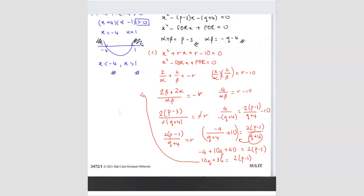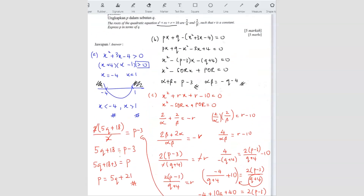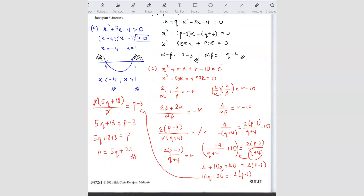Factorize the left side: 2(5q + 18) equals 2(p minus 3). The 2s cancel, giving 5q plus 18 equals p minus 3. Since we want p, bring the 3 to the other side: p equals 5q plus 21. So that's the answer — p expressed in terms of q.